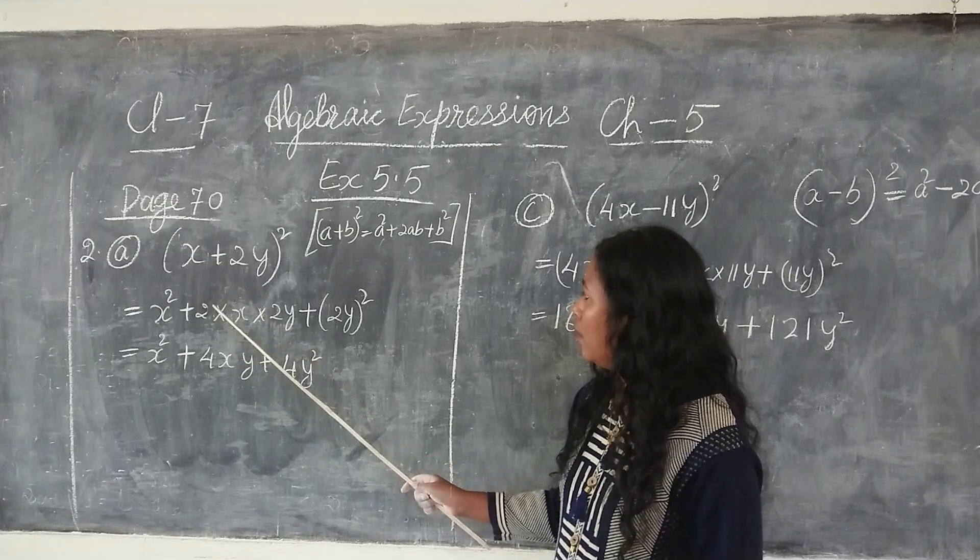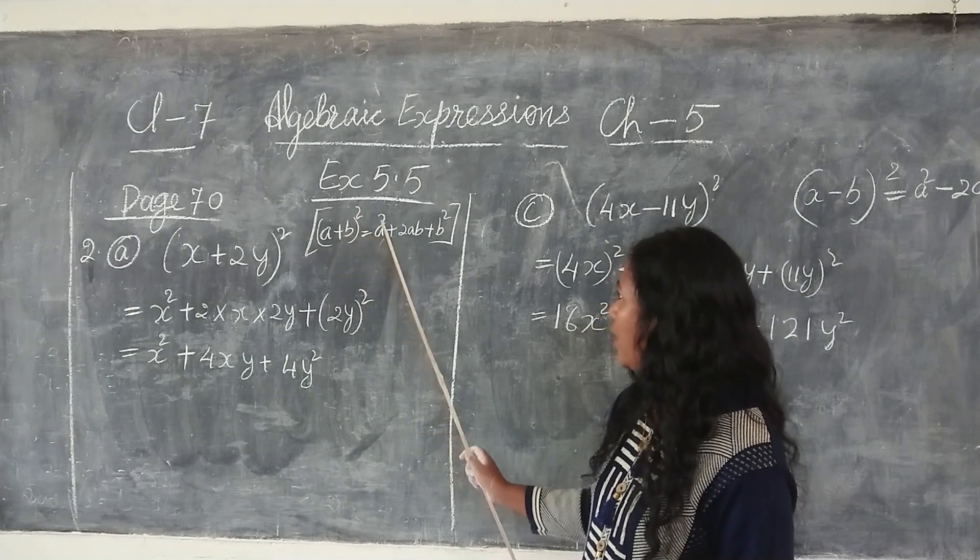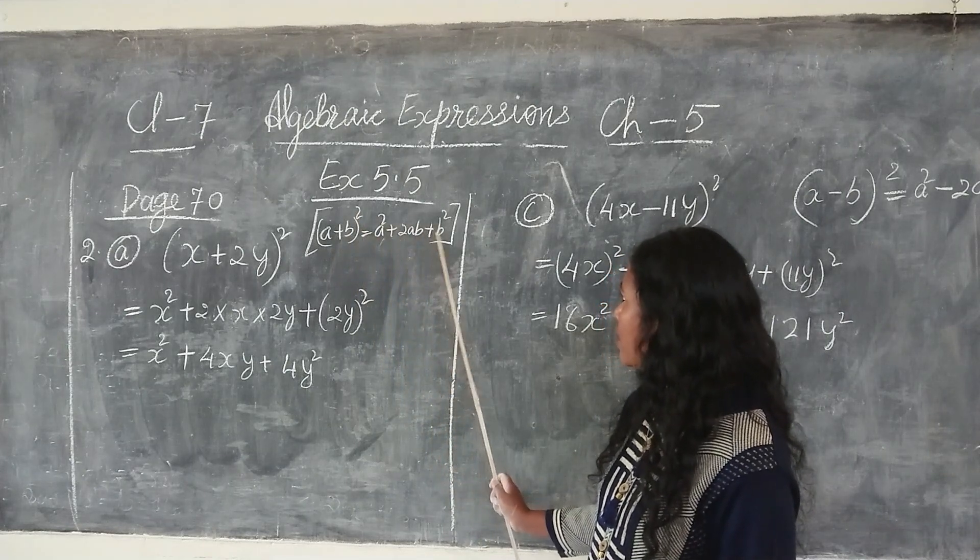Plus 2ab according to the formula. Here we have a plus b the whole square, equal to a square plus 2ab plus b square.